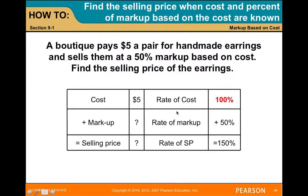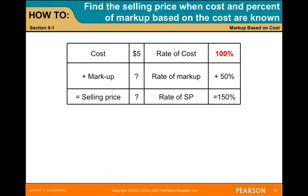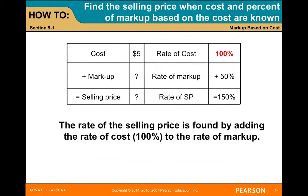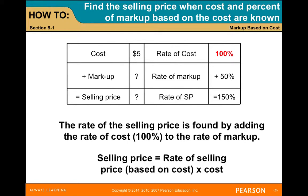A boutique pays $5 a pair for handmade earrings and sells them at 50% markup based on cost. Find the selling price. You have the cost of $5; the rate of the cost is always 100%. The markup rate is 50%, and we're trying to figure out the markup amount. The rate of the selling price is found by adding the rate of cost (100) to the rate of markup. The selling price equals the rate of the selling price based on cost times cost.